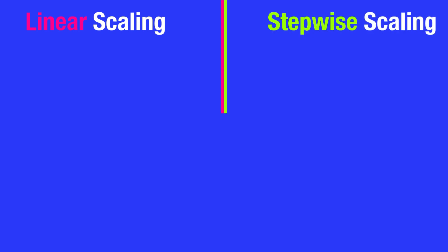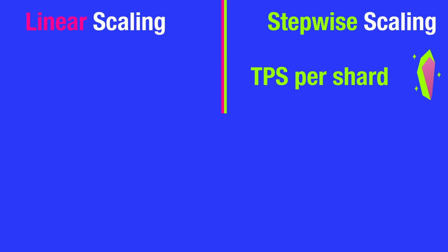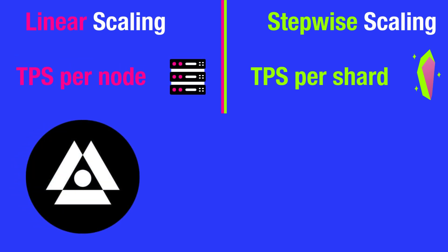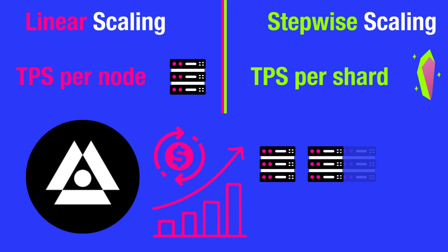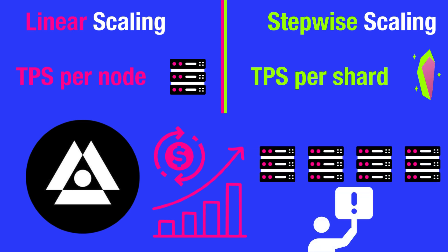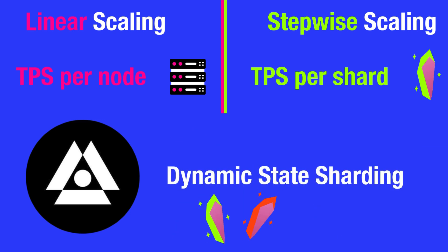Linear scaling is distinct from stepwise scaling, as stepwise scaling scales TPS per shard, whereas linear scaling scales TPS per node. Linear scaling ensures that the network can handle an increasing number of transactions without a significant drop in performance or efficiency, and is a key feature for achieving sustainably high scalability on Shardium, ensuring that the network can grow seamlessly with demand. Dynamic state sharding is the underlying innovation that facilitates linear scaling.